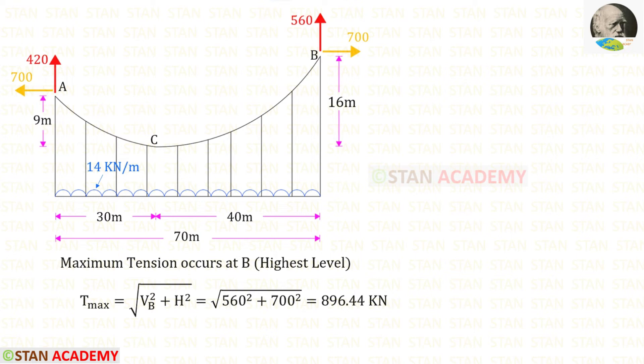Now let us find the maximum tension. It occurs at B because it is the highest level. In the point B we know the formula to find the maximum tension: root of Vb square plus H square. Vb is 560 and H is 700. Finally for the maximum tension we will get 896.44 kN.